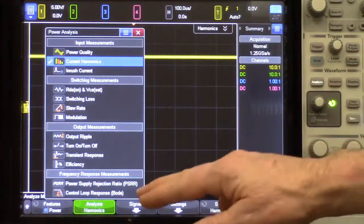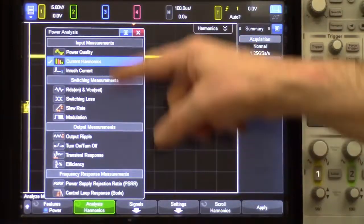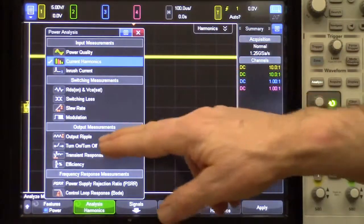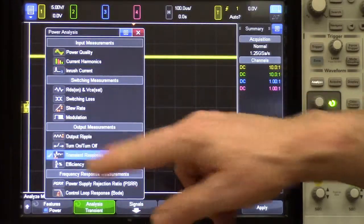Under the analysis key, you can see all the measurements that can be performed by this scope to characterize the power supply. By the way, there are videos on each of these. Right now, we are going to do the transient response measurement.